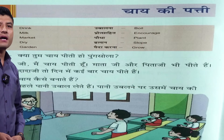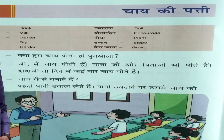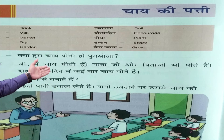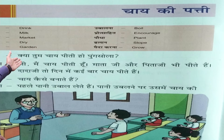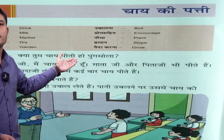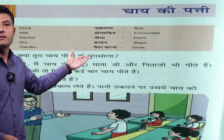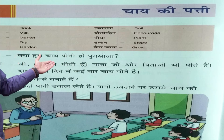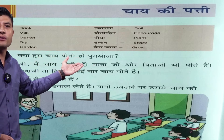Page number 32 mein sikchak — teacher — aur chaatra ke beech jo baatcheet ho rahi hai, they are having a conversation. Let's start. Sabse pehle sikchak poochhte hain: 'Kya tum chai peeti ho, Punsola?' Punsola ladki ka naam hai — she is a student. Teacher kya pooch rahe hain: 'Kya tum chai peeti ho, Punsola?' Aap log bhi peete honge chai.